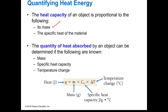Heat capacity is proportional to the mass, and also dependent on the type of material — that's what we call specific heat. Each type of material has its own specific heat, and this is not something you memorize; it's something you're given or look up on a table. The quantity of heat absorbed in joules is determined if you know the mass, the specific heat (c sub s, because it's specific), and the temperature change. So our formula is: Q equals mass in grams times specific heat in joules per gram degree C, times delta T in degree C.